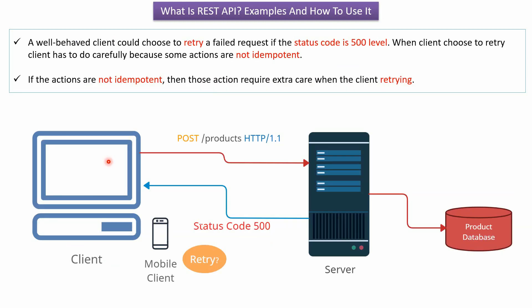Here you can see a client that sent a request to the server. Because of some issue on the server, the server could not process the request, and sends HTTP status code 500 to the client. If the client is well-behaved, it may choose to retry the failed request — but it must do so carefully, because some actions are not idempotent, and those actions require extra care when retrying.